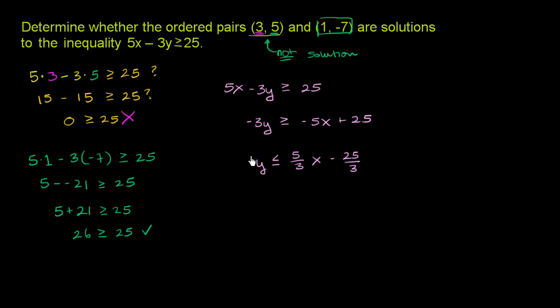So if I were to graph this, this is now the inequality: y is less than or equal to 5 thirds x minus 25 over 3. So if I wanted to graph this, I'll try to draw a relatively rough graph here, but really just so that we can visualize this. So our y-intercept is negative 25 over 3.